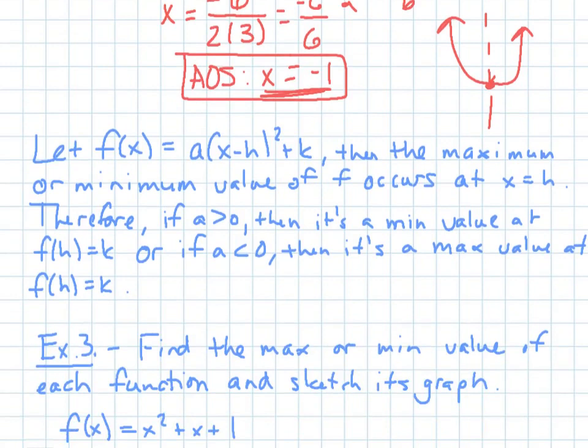So next thing, let f of x equal a times x minus h squared plus k, and then the maximum or minimum value of f occurs at x equals h. So it occurs at the vertex's x value. Therefore, if a is greater than 0, then the minimum value is f of h equals k. So if you plugged in h, then I'll give you the y value k, which is a minimum.